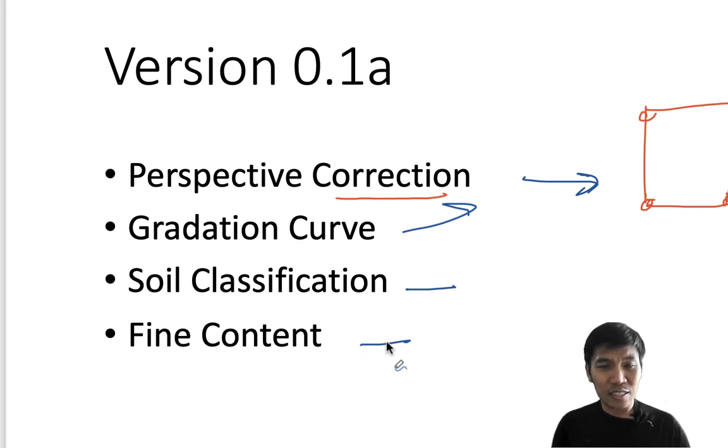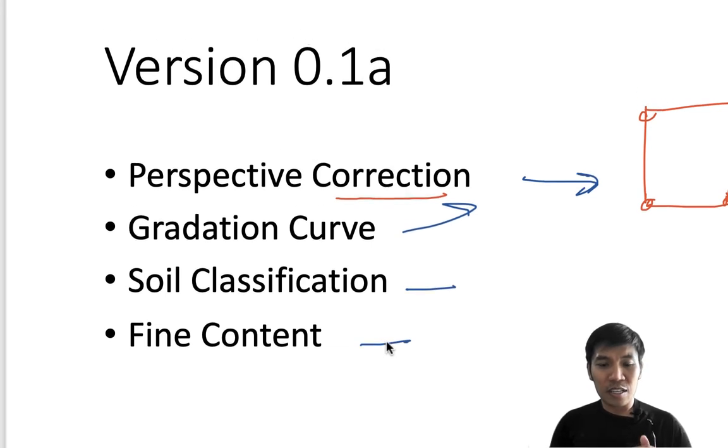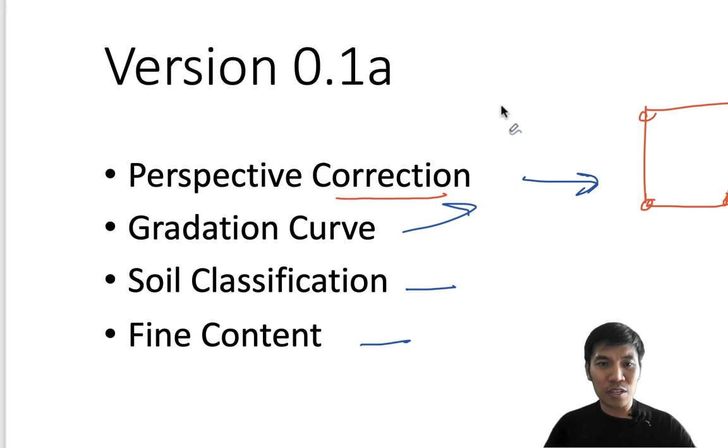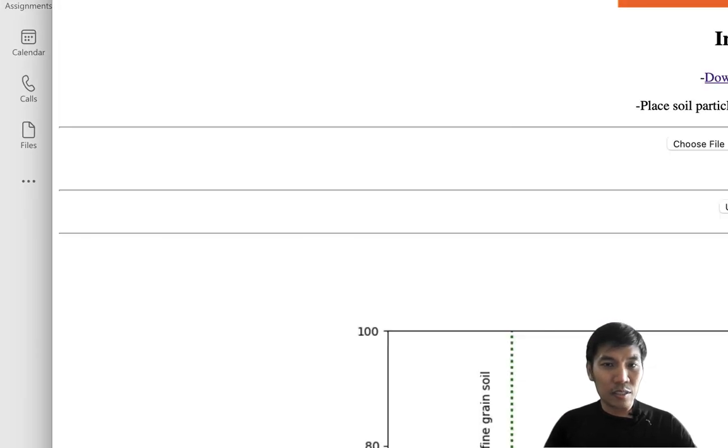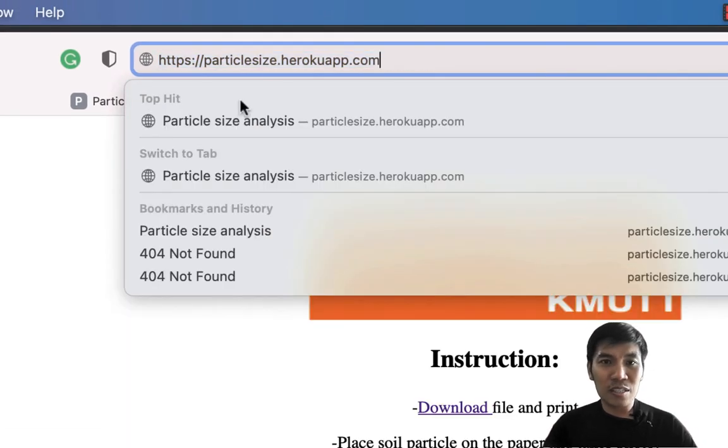I developed the code in Python, but if I put it on my computer it's difficult to use. So I put this code in a web app using Streamlit and uploaded it to the web, so everyone in the world can use this app to get the gradation curve. Let me show you. You just go to particlesize.herloguf.com.